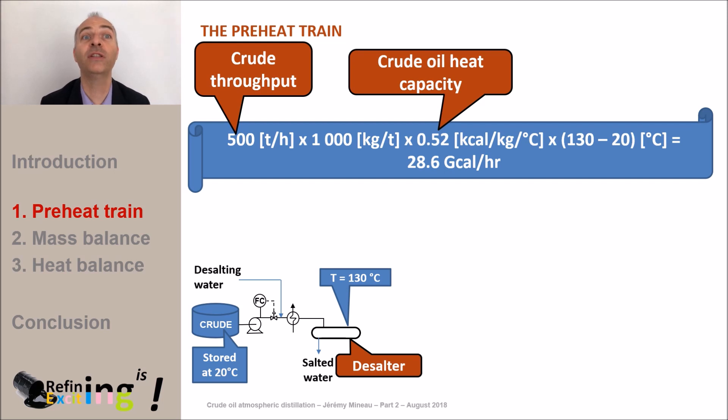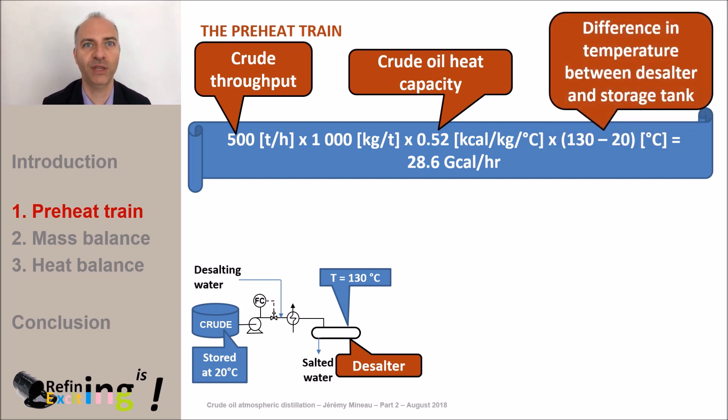So to heat up 500 tons per hour of crude oil from 20 degrees C to 130 degrees C it will require about 28 gigacalories per hour. For information it would correspond to a consumption of about 3 tons per hour of fuel.